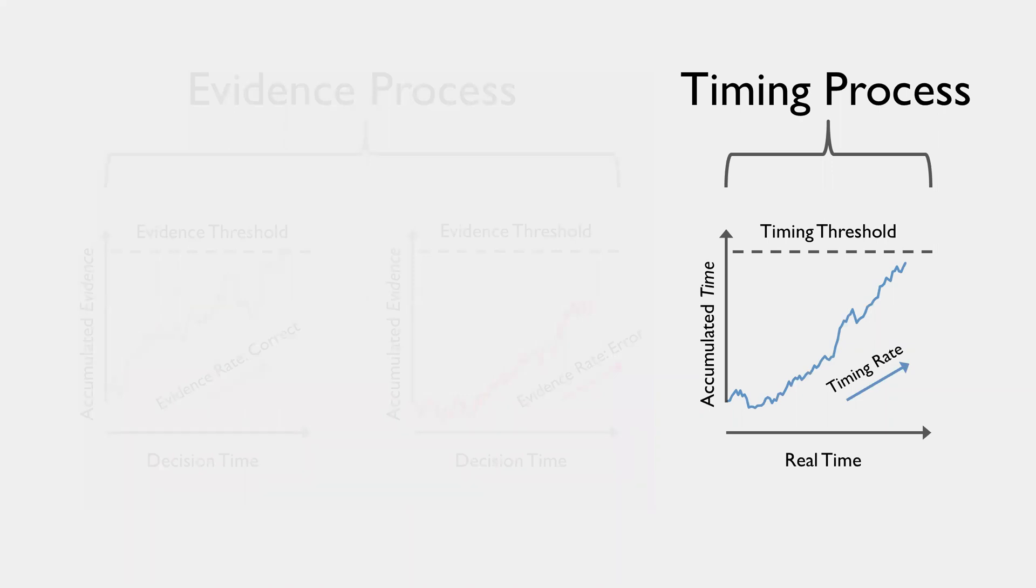So this is represented in a very similar way in the model. So we have an accumulator. On the x-axis, we have the passing of real time. And on the y-axis, we have some kind of accumulated time or perceived time that has passed. And so there's a temporal integration process at a particular rate up to a particular threshold.